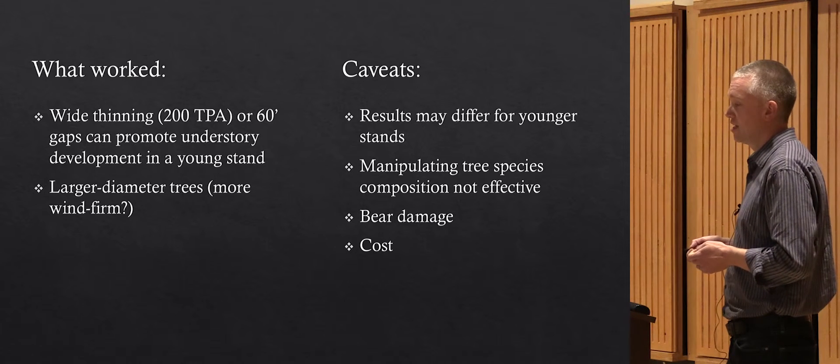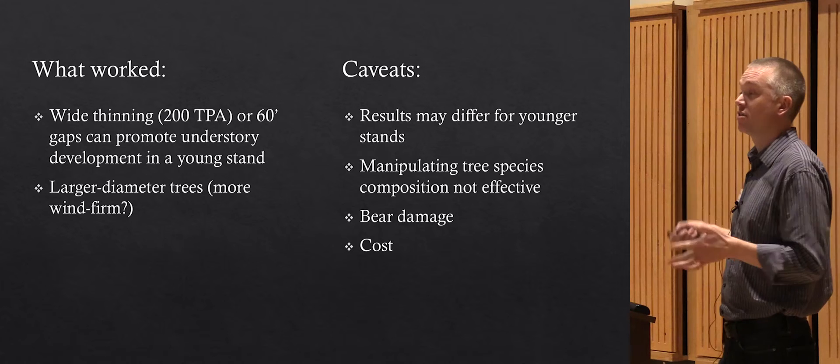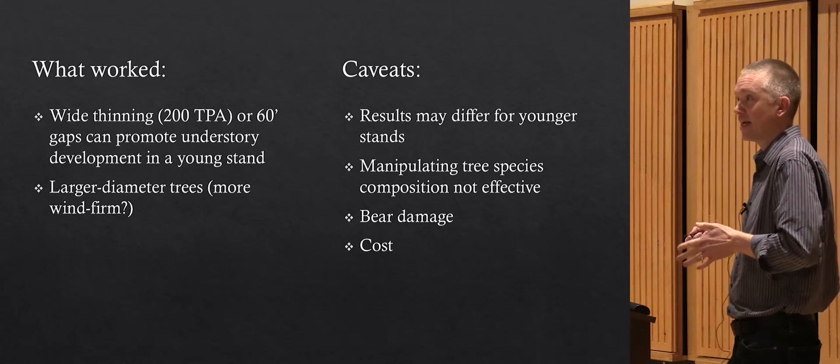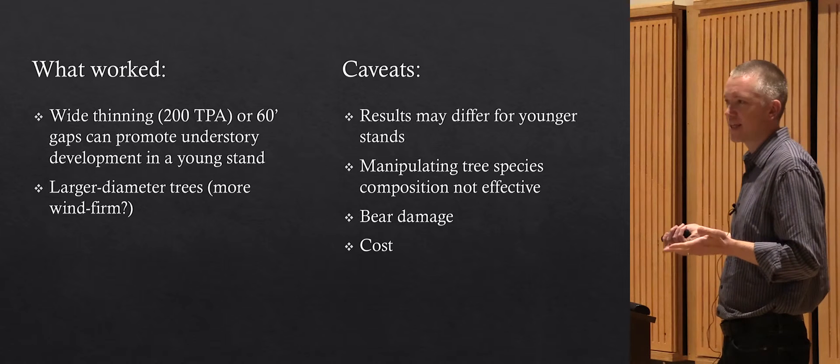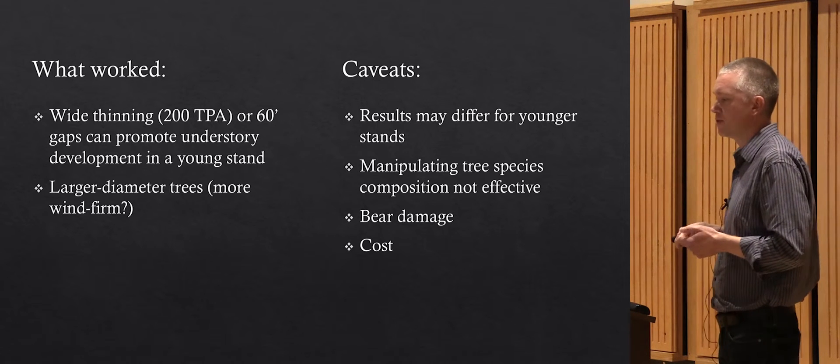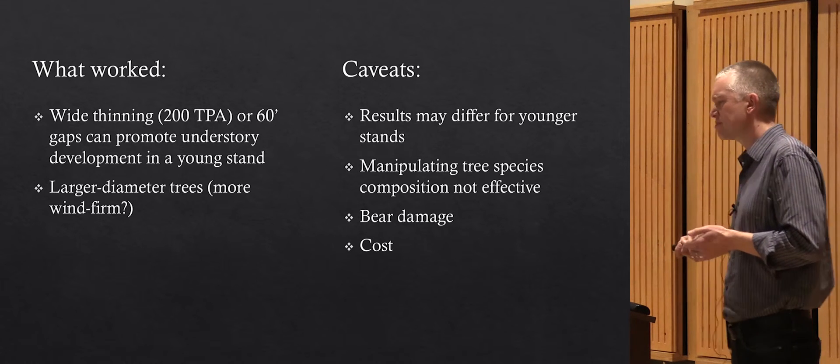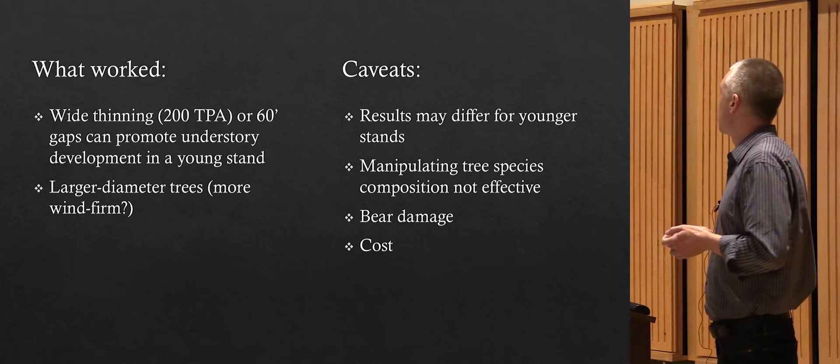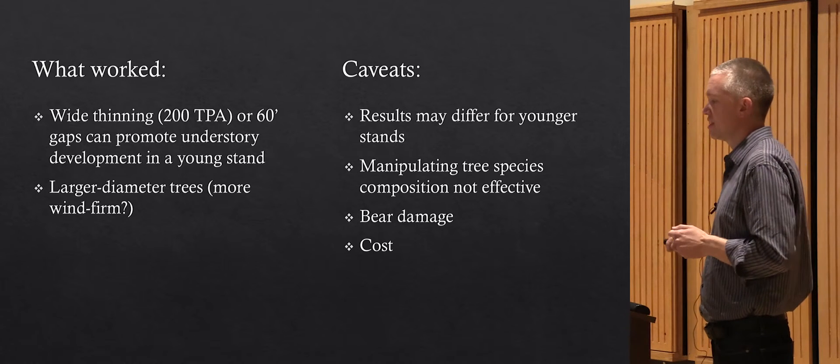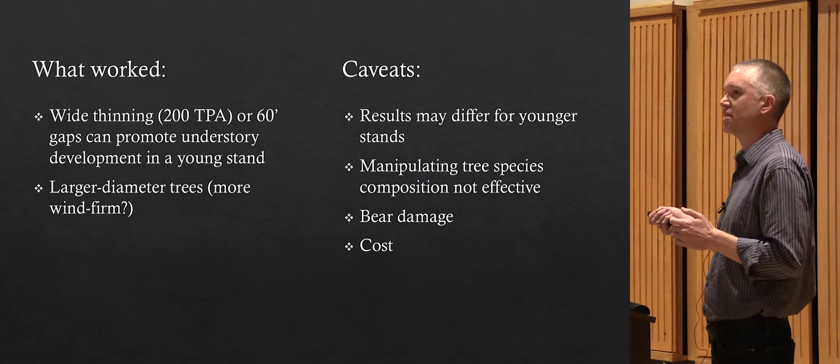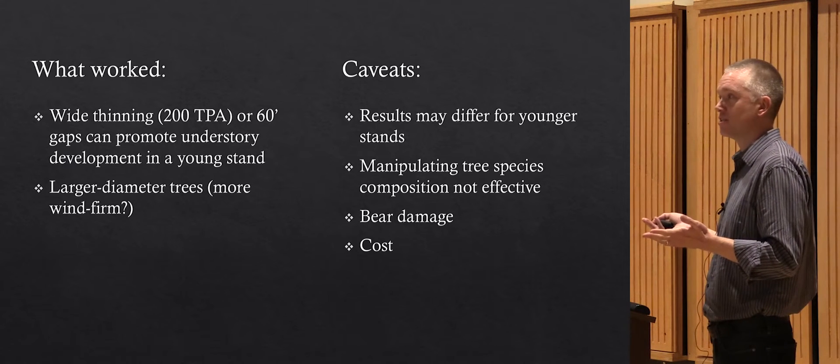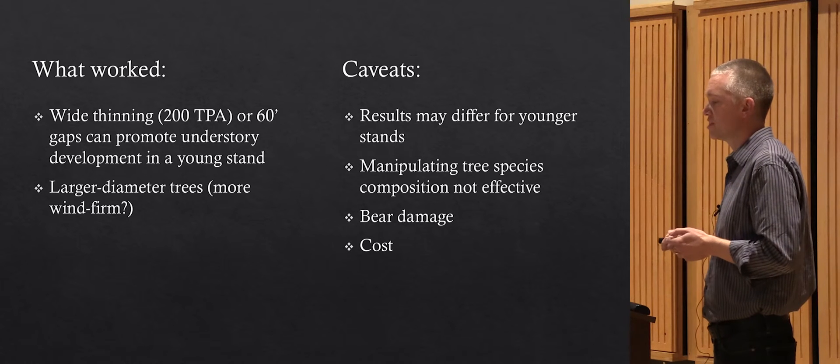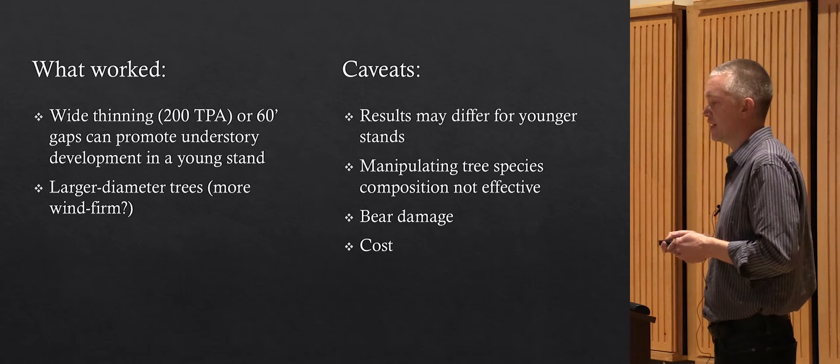There are a few caveats. These were pre-commercially thinned at about 20 years of age. That's older than you would normally do pre-commercial thinning. You'd probably normally want to do it by 10 years of age when the trees are about 15 feet tall. Results may differ based on that. The reason these were thinned later is just because in the 1990s, there was such a backlog of thinning that needed to be done due to the large number of young stands. They didn't get to them until about age 20.